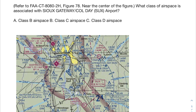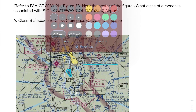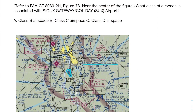It helps to first find out where this airport is, so I take a look at Figure 78. It says it's near the center of the figure. I can see there's a description here — looks like this is the airport, that's the runway. Right off the bat, you might think this is in class E airspace because you see this massive red shaded section around the airport.